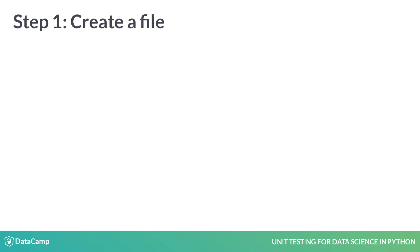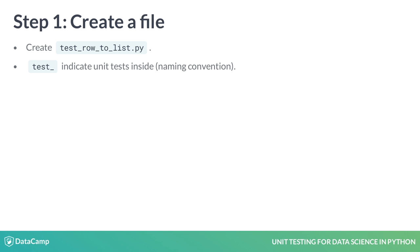To start unit testing with PyTest, we will first create a file called test_RowToList.py. When PyTest sees a file name starting with test underscore, it understands that this is not a usual Python file, but a special one containing unit tests. We must make sure to follow this naming convention. Files holding unit tests are also called test modules, and we just created our first test module.